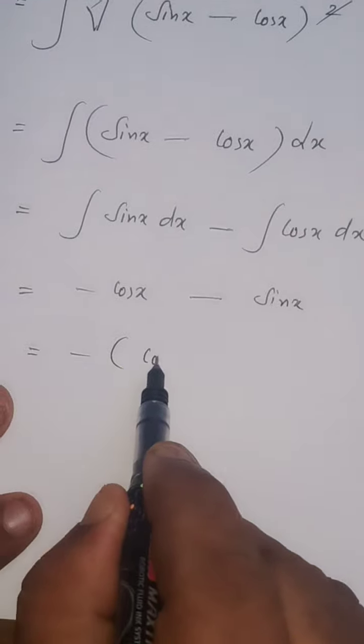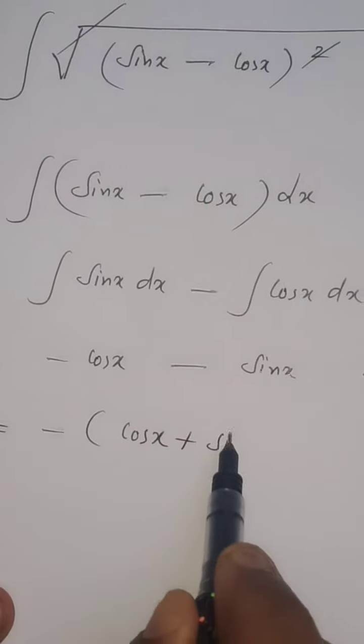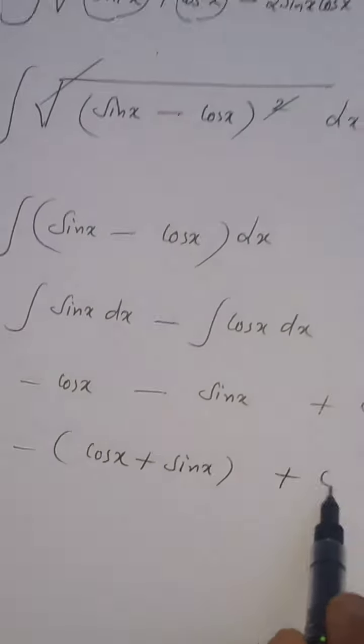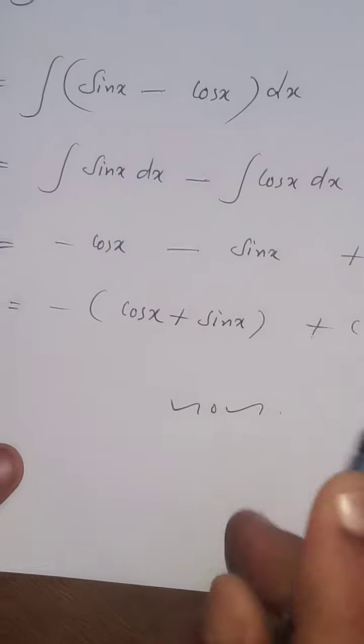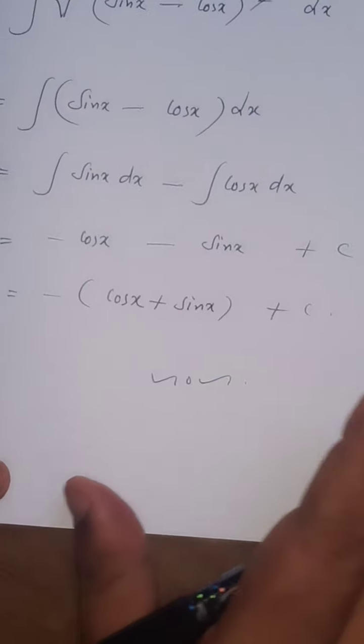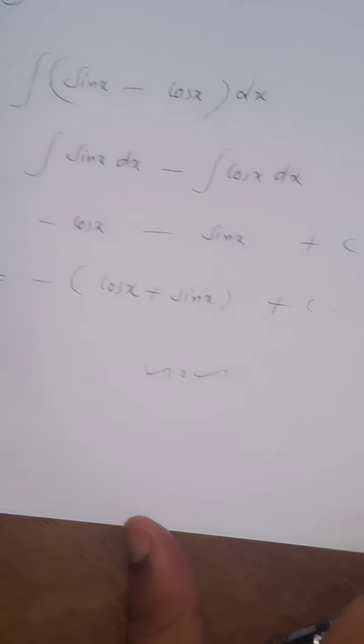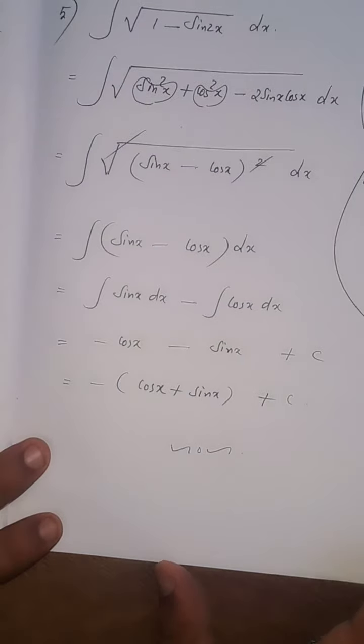You can take minus common: minus of cos x plus sin x plus c. So problem number 5 is over, so exercise 2.4 is completely over. I will be teaching the next exercise in the next video. Thank you, children.